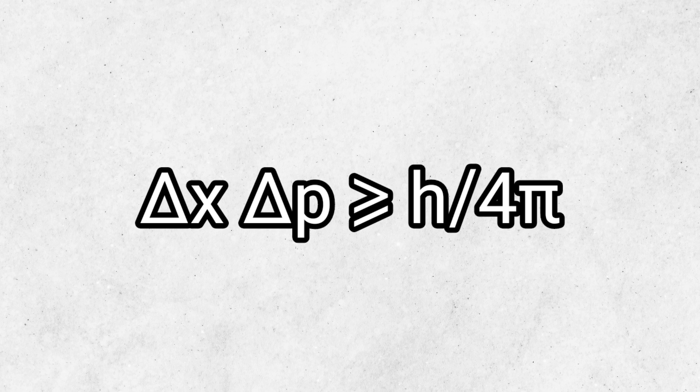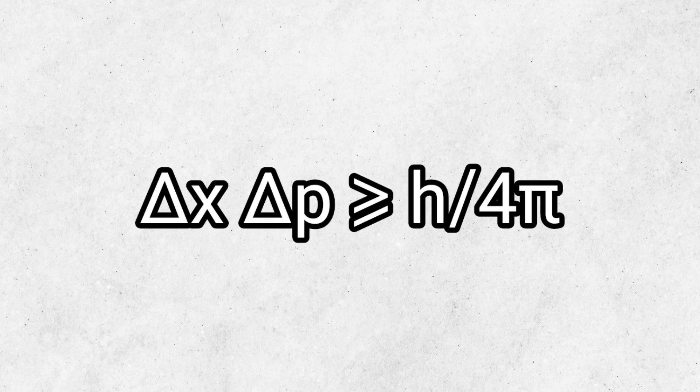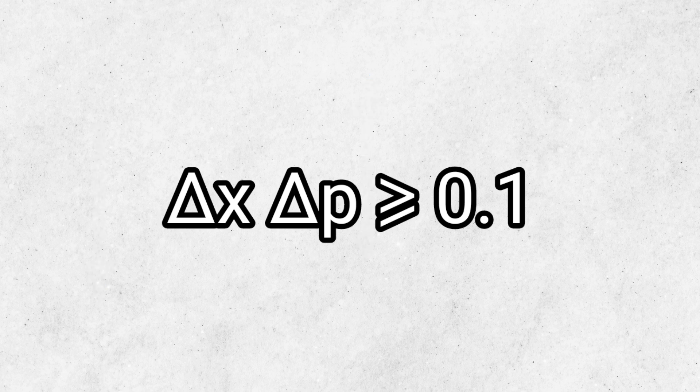That's why the principle can be seen in the macro world. Take 0.1 here for example — the more delta x decreases, the more delta p has to increase to satisfy this equation.